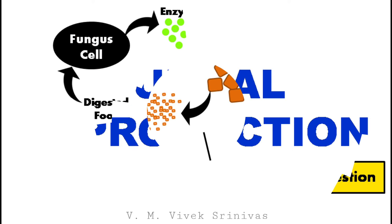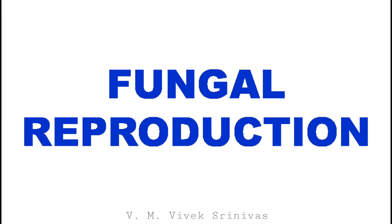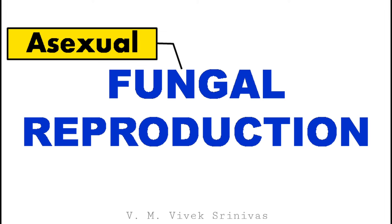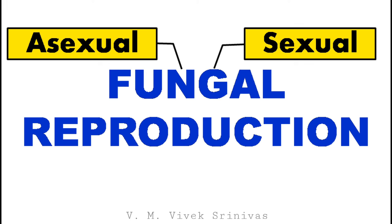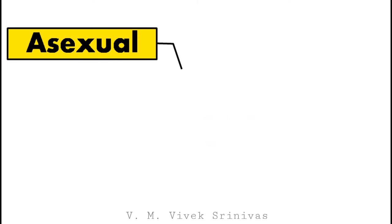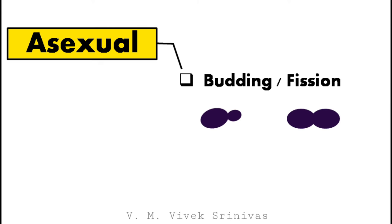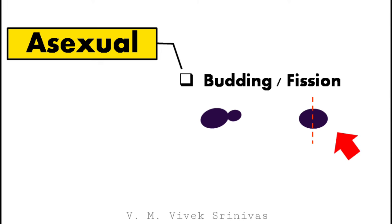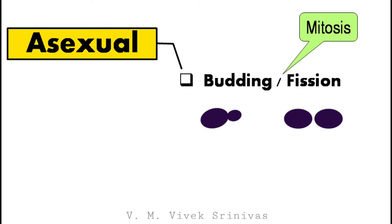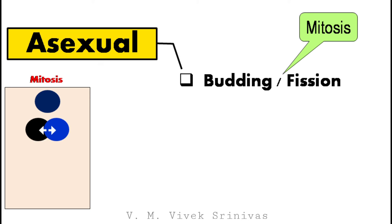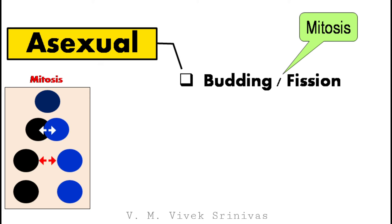Fungal reproduction: unlike other organisms, both asexual and sexual reproduction are seen in fungi. Asexual reproduction occurs by budding or fission. In budding, the progeny cell buds off from the parent cell. In fission, a fissure is created in the middle and the two cells separate. This occurs by mitosis — from a single cell, two cells are formed. As a result of asexual reproduction, asexual spores are produced.